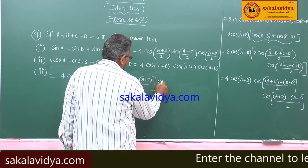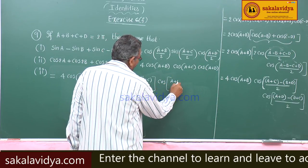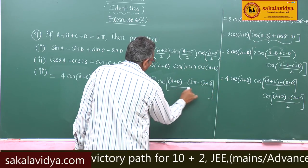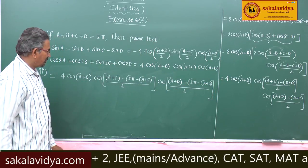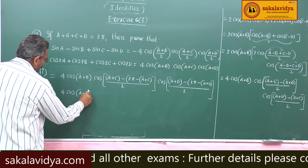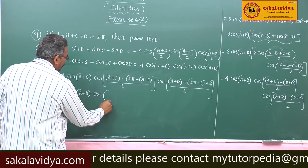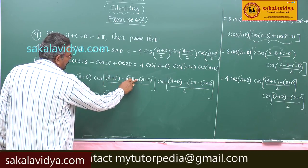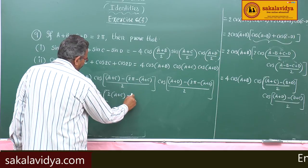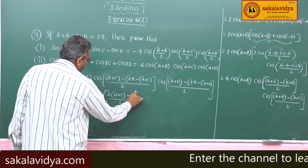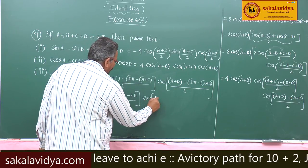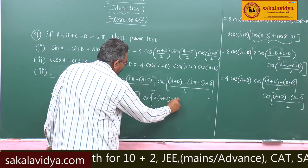Similarly, cos((A+D − (B+C))/2). So this equals 4cos(A+B)·cos((A+C − (2π − (A+C)))/2), and similarly cos((A+B − (2π − (A+D)))/2), which simplifies to 4cos(A+B)·cos((2(A+C) − 2π)/2)·cos((2(A+D) − 2π)/2).